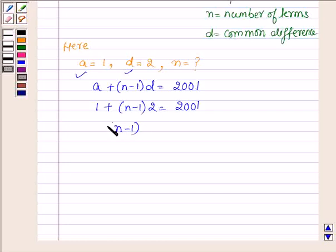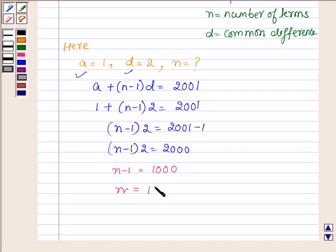That is, n minus 1 into 2 is equal to 2001 minus 1, so we have n minus 1 into 2 is equal to 2000, or n minus 1 is equal to 1000, or we can say that n is equal to 1000 plus 1 is equal to 1001.